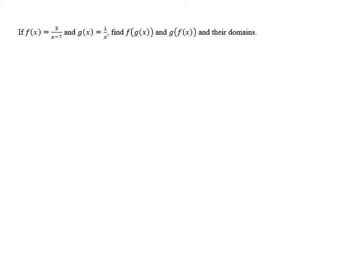First, let's look at the domains of f of x and g of x. Both of these are rational expressions with variables in the denominators, so we need to make sure that the denominators aren't equal to 0. For f of x, the denominator is x minus 7, so x minus 7 cannot equal 0. Adding 7 to both sides, we get that x cannot be equal to 7. So the domain here is the set of numbers x such that x is not equal to 7.